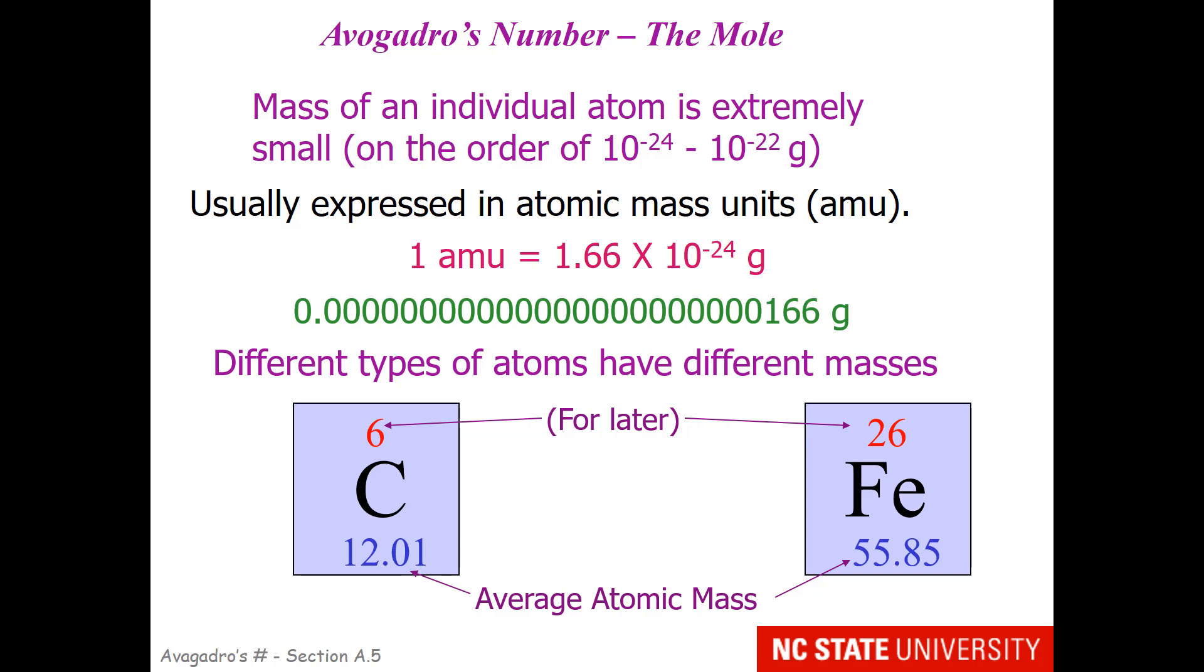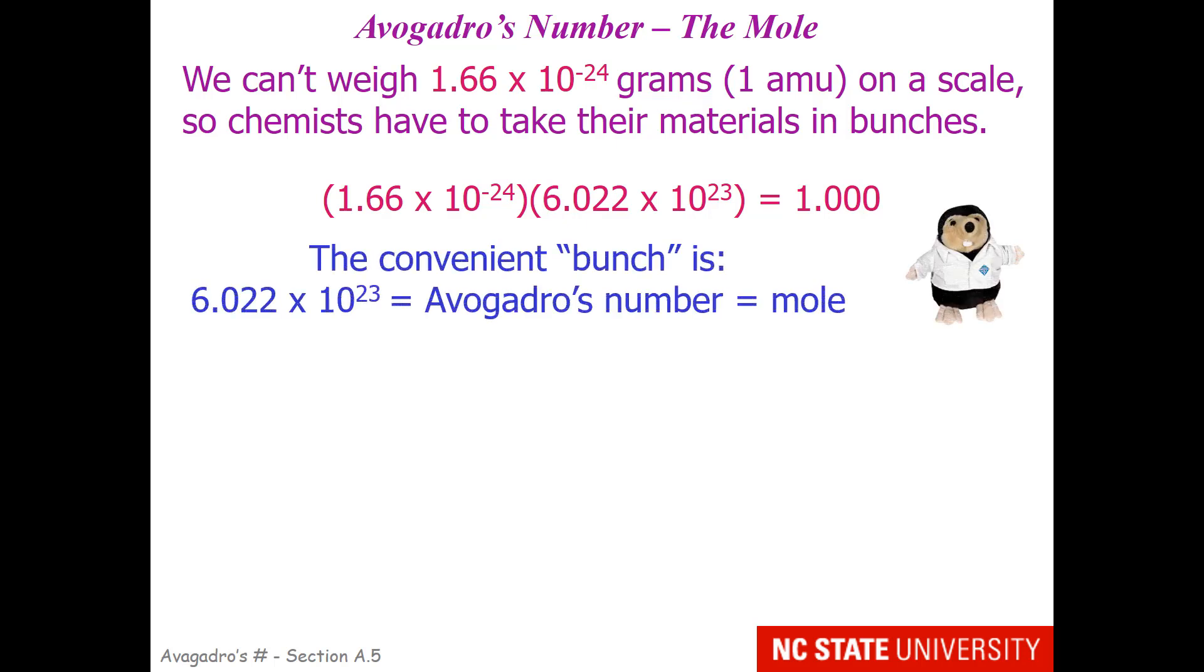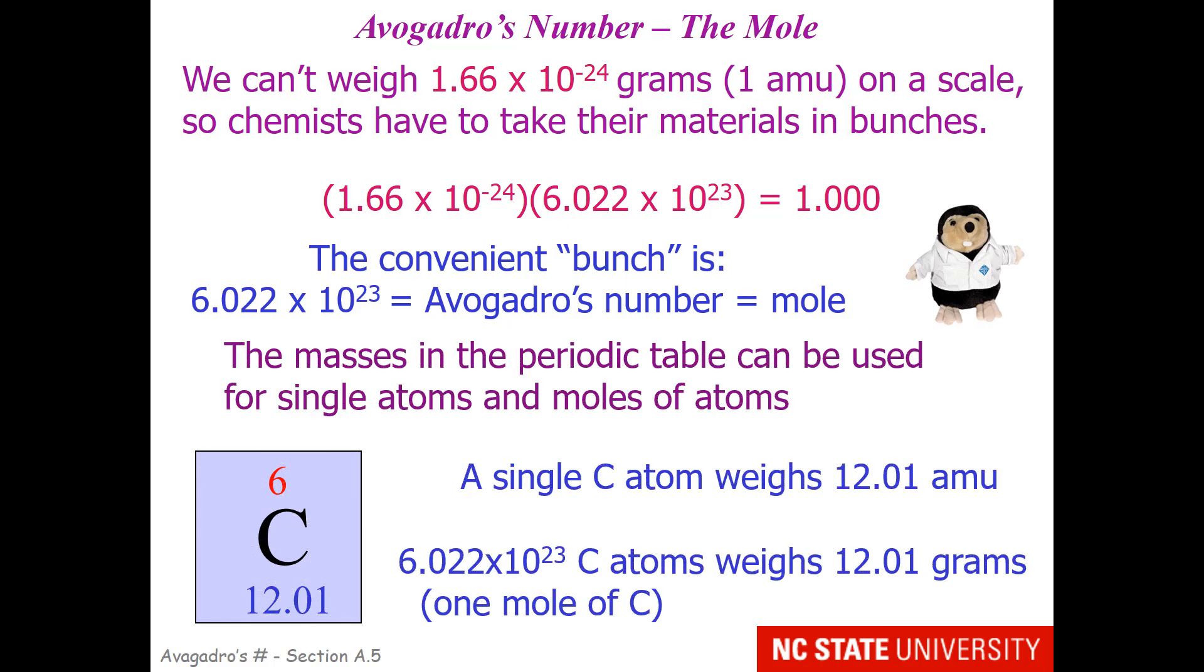Don't worry about the integer number. We'll get to that later. So, you can't weigh an atomic mass unit on a scale, so we have to take our materials in bunches. It turns out that if you multiply the atomic mass unit by this value, 6.022 times 10 to the 23rd, you get a value of 1. So, this is a very convenient conversion number to give us one group of material. Most of you, I believe, will recognize this bunch. This is known as Avogadro's number or the mole. It is the chemist dozen. It is the bunch of material that we take our atoms in.